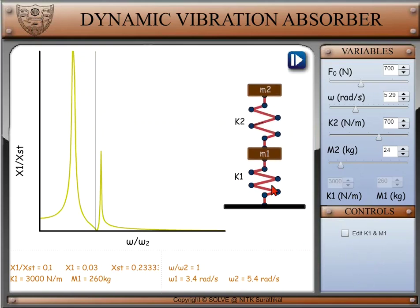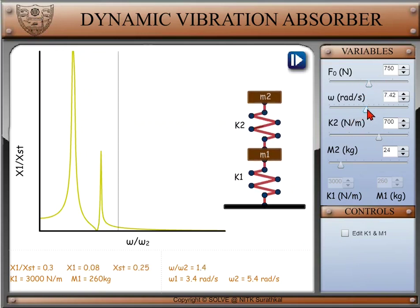Change the force F0 and speed omega to run different variations of the system.